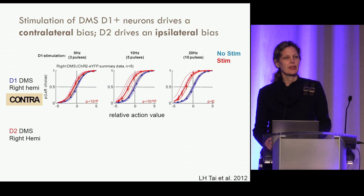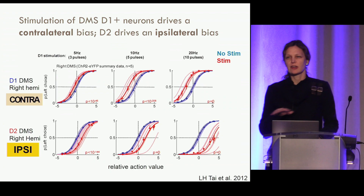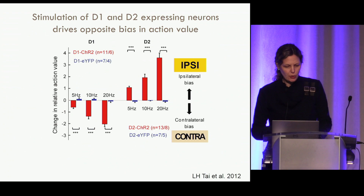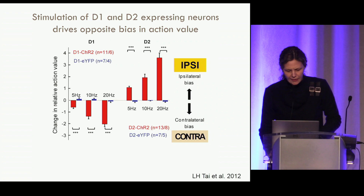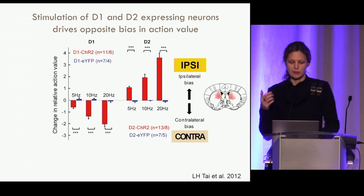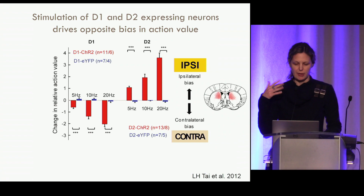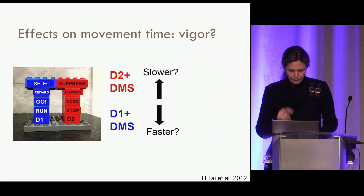Interestingly, when we go to the indirect pathway — staying in the right hemisphere — we see a shift that's ipsilateral: animals are biased toward the same side we're stimulating. So if we're in the right hemisphere stimulating D2 SPNs, they're biased toward the right side in their choice. Summarizing this first set: there's a dose-dependent effect on choice, and this is interesting thinking about the Duplo model because it also makes us think about interactions between the two hemispheres, not just within a hemisphere.